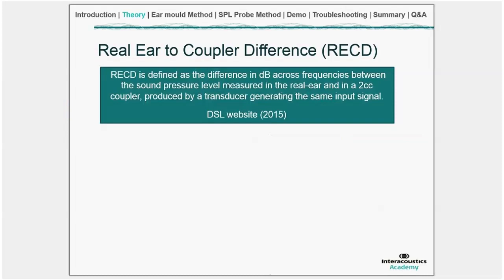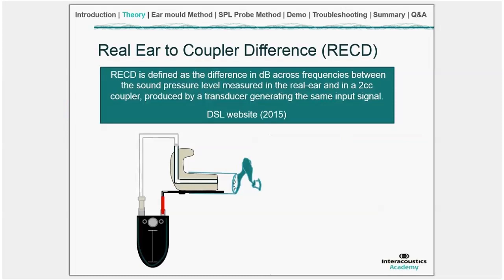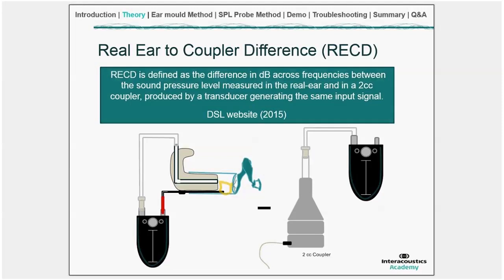An RECD measurement takes two measurements: the real ear response and the coupler response. We place a probe tube in the ear to measure the sound pressure level at the eardrum while the ear is occluded with an ear mould. Then we measure the characteristics of the 2cc coupler using the same stimulus at the coupler microphone. Subtracting these two measurements gives the coupler the characteristics of the ear canal.